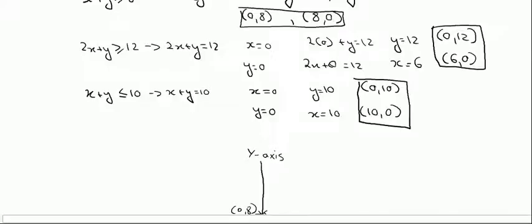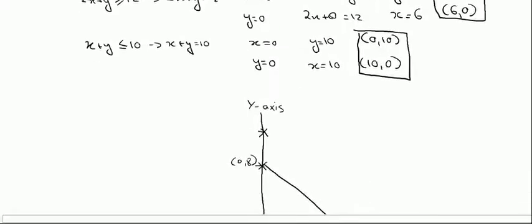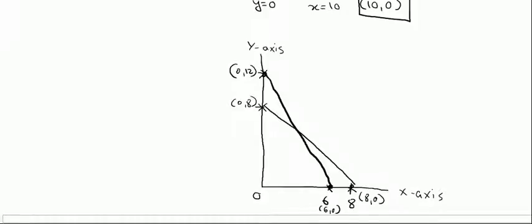My second line is 2x plus y greater than or equal to 12, passing through (0,12) and (6,0). Since 8 is already marked, 12 should be somewhere above it on the y-axis. Point (6,0) is on the x-axis. My second line starts from (0,12) and ends at (6,0).